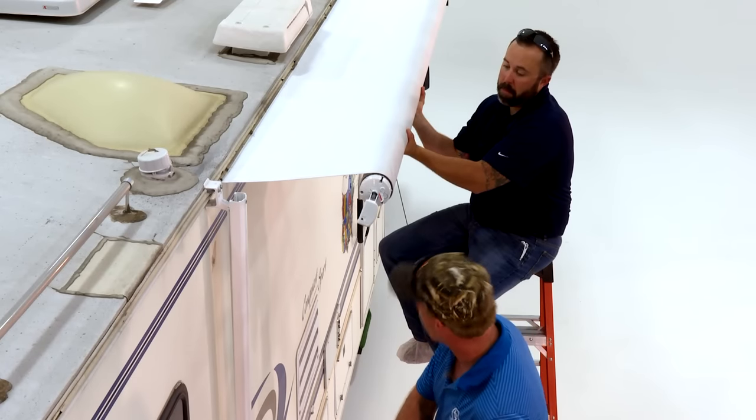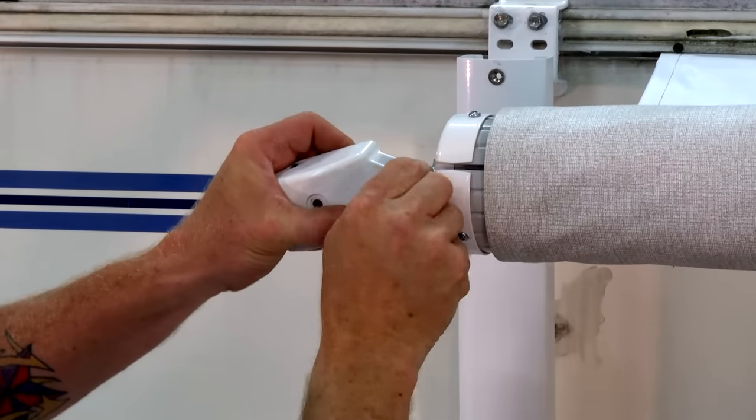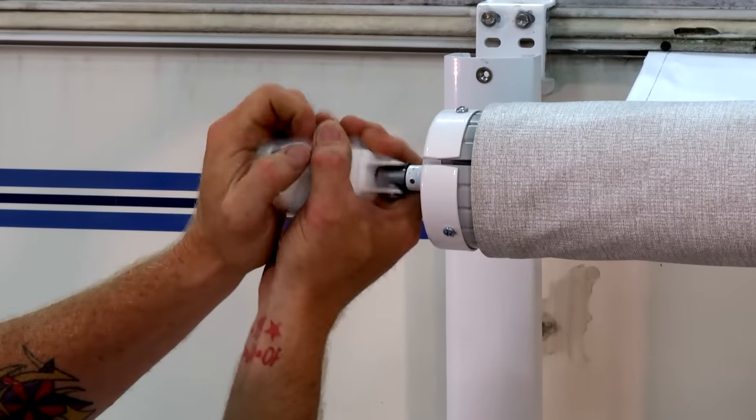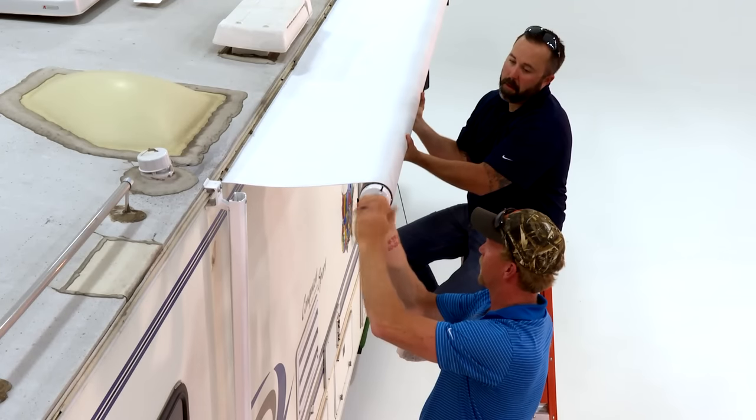Now you will need to take the tension off of the awning spring. Firmly grasp the end cap, then remove the cotter pin from the end cap. Slowly release the tension by unwinding the spring cap in a counter-clockwise fashion.